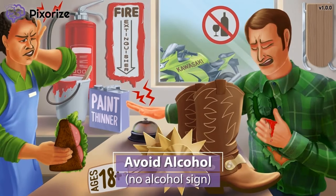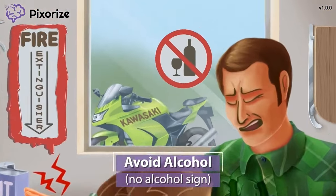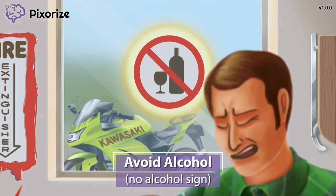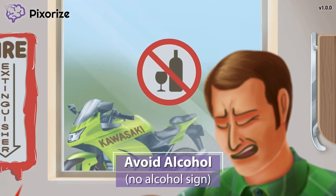Last but not least, notice that there is a no alcohol sign in the store window. It's pretty common for retail stores to put up signs like this — you don't want drunk people in a store full of sharp and dangerous spurs. This no alcohol sign should remind you that people taking aspirin should avoid alcohol. The combination of aspirin and alcohol increases the risk of GI ulcers, bleeding, and liver damage.